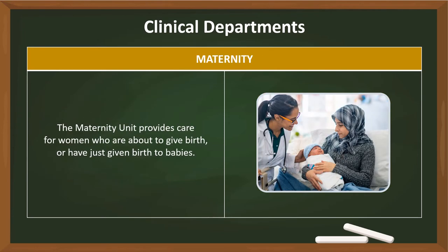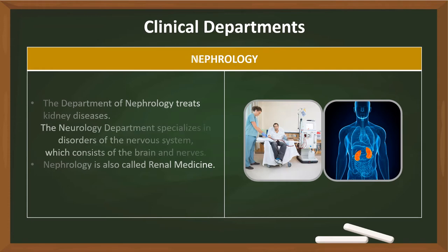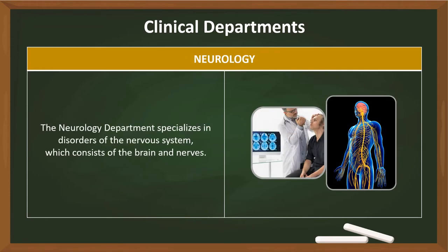The maternity unit provides care for women who are about to give birth or have just given birth to babies. The department of nephrology treats kidney diseases. Nephrology is also called renal medicine. The neurology department specializes in disorders of the nervous system, which consists of the brain and nerves.